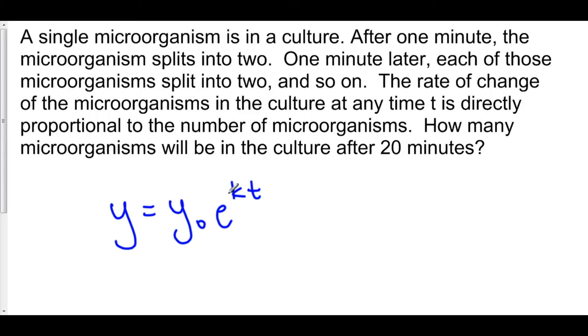So in order to figure out how many microorganisms will be in the culture after 20 minutes, we know that t is going to be 20, k we need to figure out, and y naught we also have to figure out. And if we can do all of that, we can solve this problem. So we need k and we need y naught.